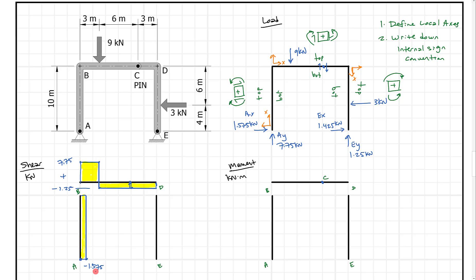For our last member, we have minus 1.575 going on at the corner. We're going to need an equal and opposite internal force, which causes our shear to start by going up to positive 1.575 kilonewtons. Then we come straight down at the 3 kilonewton load, dropping to minus 1.425 kilonewtons. There's no change in load after that, so we come straight across to point E at minus 1.425 kilonewtons. That completes our shear diagram.